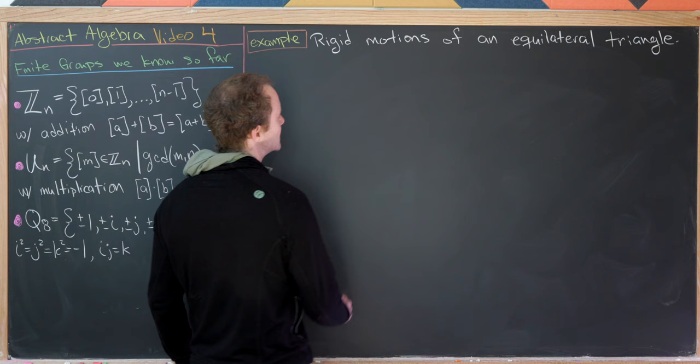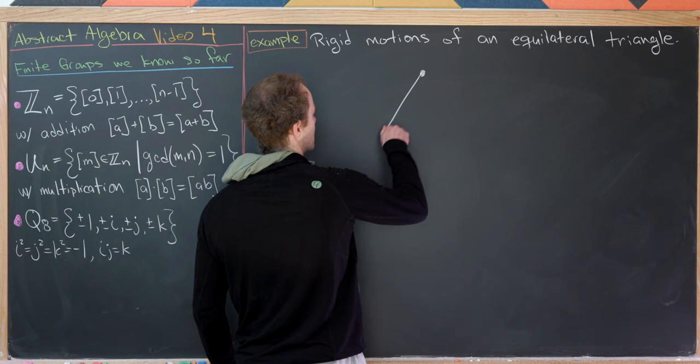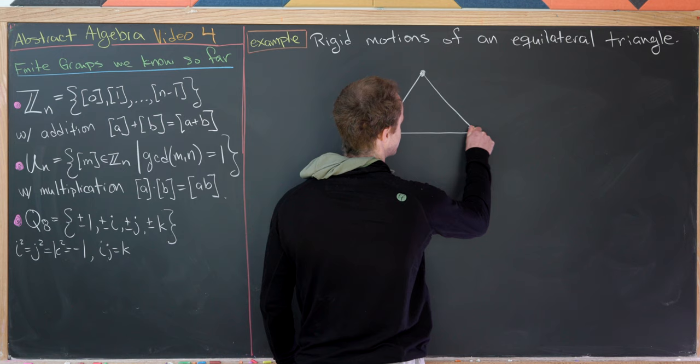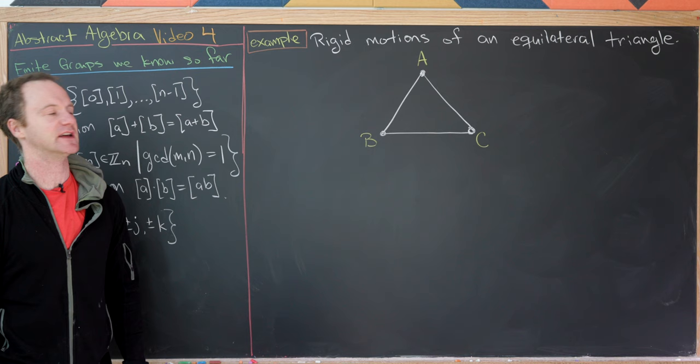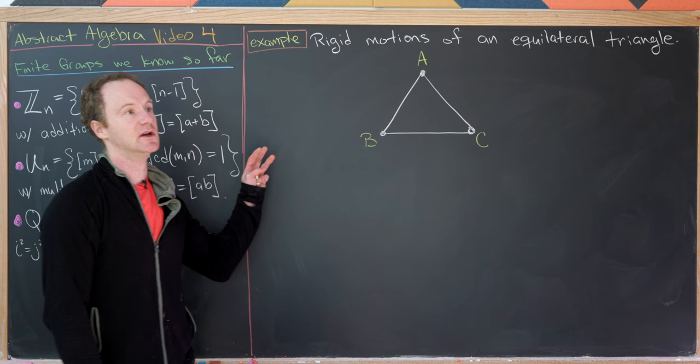Let's start with our base equilateral triangle. We'll draw it on the board and label the vertices. In real life the vertices are not labeled — I'm just labeling them so we can see what action is performed. It may look like the object has changed, but it hasn't; the labeling just shows us exactly what action we've done.